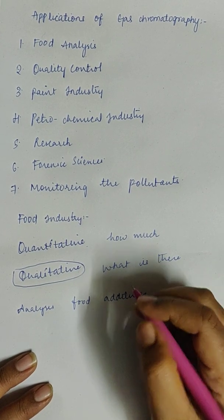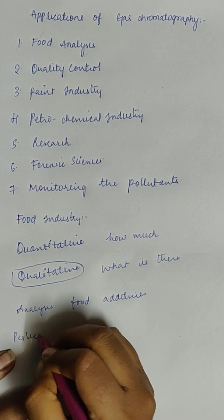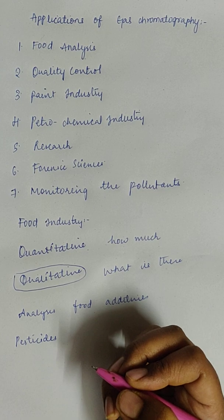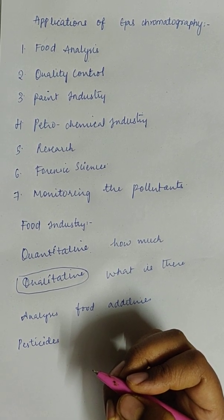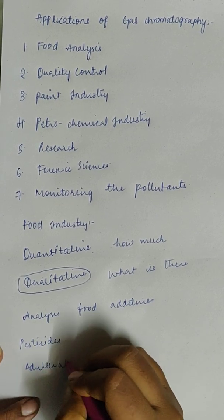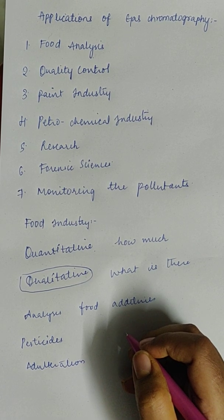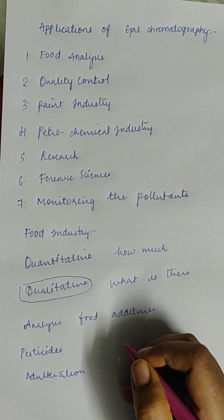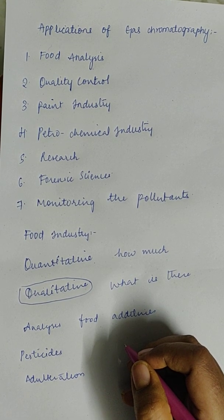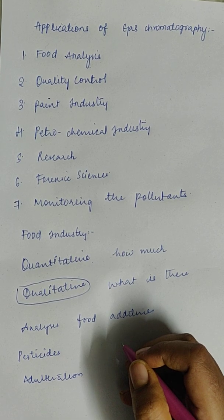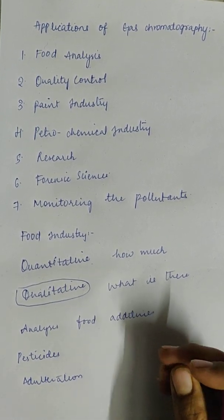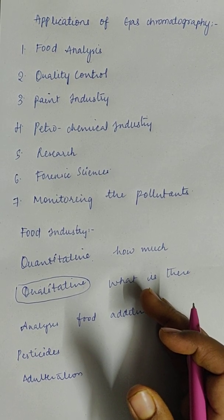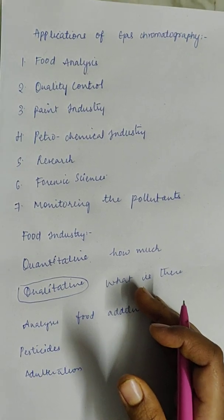You can also analyze pesticides, environmental pollutants, and toxins in food. You can even check for adulteration of food samples. For example, buffaloes being injected with hormones — you can check the quality of milk, whether it is contaminated with hormones or has excess proteins. During packaging, milk may also be mixed with coloring agents or milk powder. All those adulterations can be easily analyzed by gas chromatography.